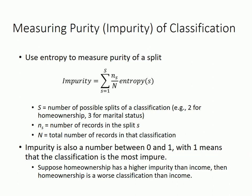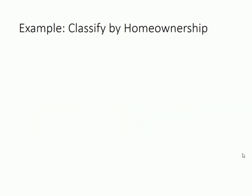So if we want to know which classification is better, we simply measure their impurity and favor the one with a lower impurity. For example, suppose home ownership has a higher impurity than income — then home ownership is a worse classification than income.